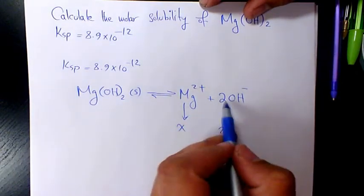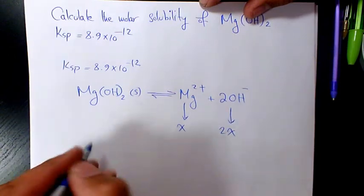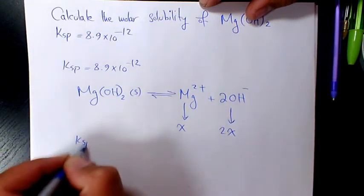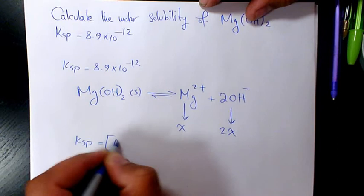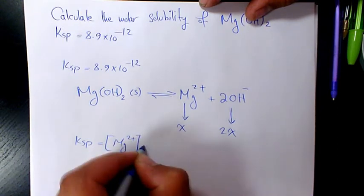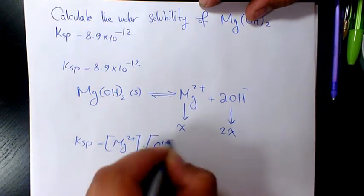So Ksp equals Mg2+ times OH- to the power of 2.